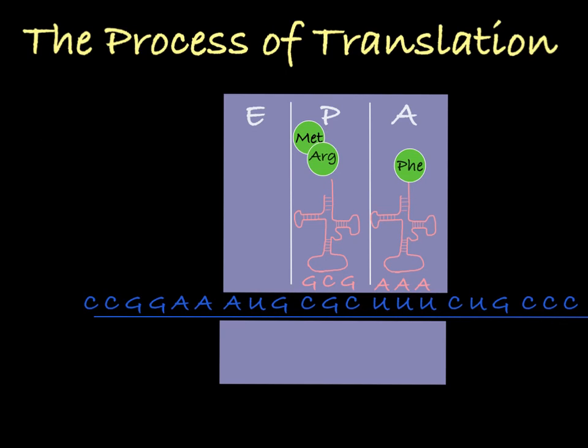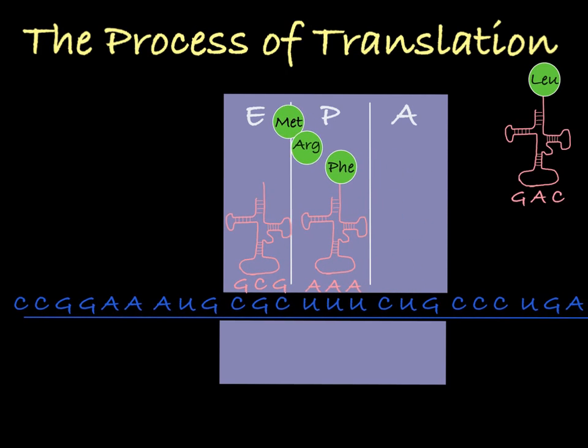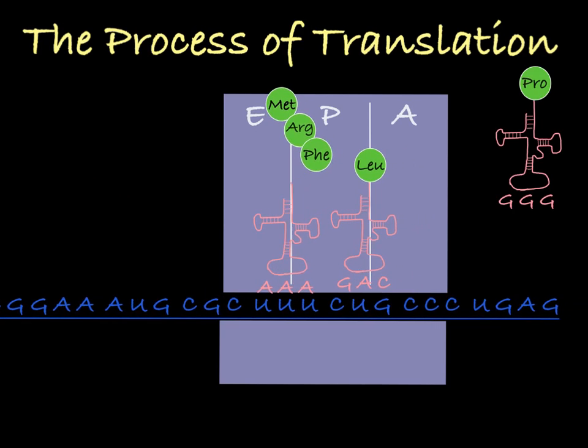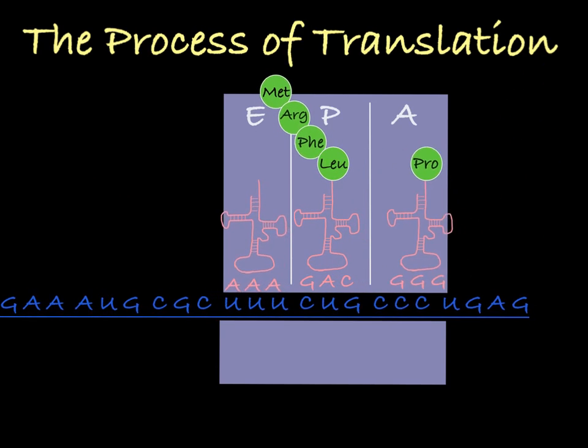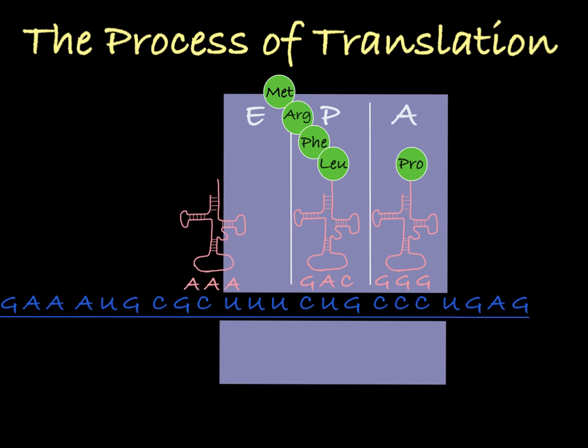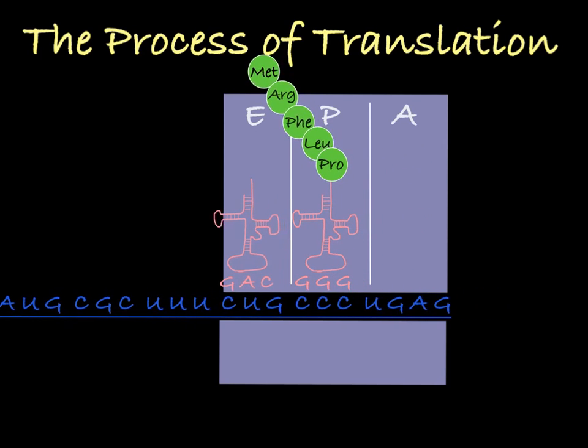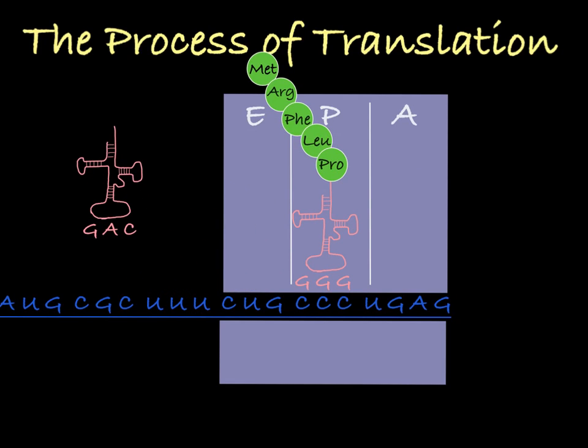At this point, the process simply continues. A new tRNA molecule will come in hydrogen bond complementary to the codon in the A site. This tRNA molecule will then be moved into the P site. In this move, the tRNA that was occupying the P site will be moved into the E site. As it's moving, it will transfer its polypeptide chain onto the incoming amino acid. In this way, the P site continuously holds a growing polypeptide chain as the ribosome moves along the mRNA molecule one codon at a time.